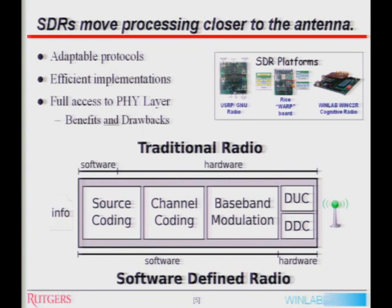Why is this a big deal? Why is it desirable? Now these protocols for GSM, Wi-Fi, and Bluetooth can be adapted on the fly with a simple downloading of code. Additionally, looking at Bluetooth and Wi-Fi, which operate in the same band, you can have more efficient implementations rather than having two separate devices. You can combine them and have more efficient implementations. This full access to the physical layer, of course, has both benefits and drawbacks.